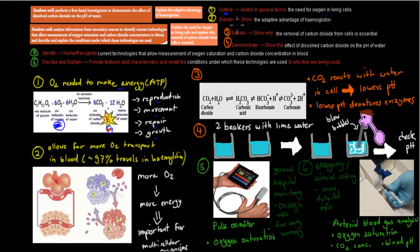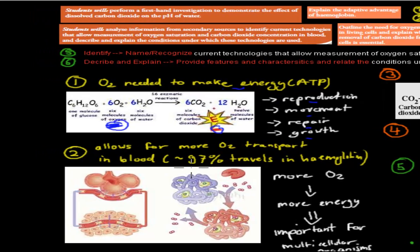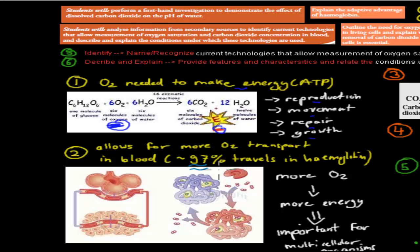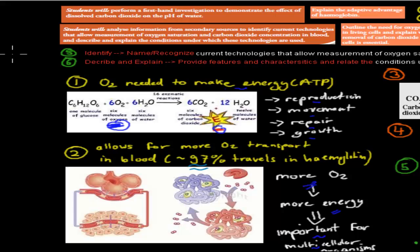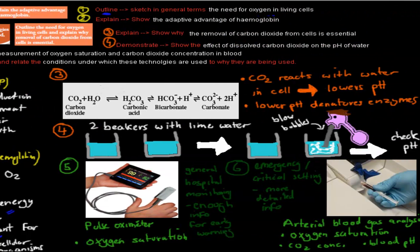The next dot point was 'explain' — show the adaptive advantage of haemoglobin. We need haemoglobin because most of our oxygen is carried in blood — about 98% is carried in haemoglobin. Without haemoglobin we would have less oxygen, and with haemoglobin we can make more energy. This is really important for multicellular organisms such as humans and birds, because they need to sustain lots of cells, requiring lots of oxygen. Without haemoglobin they wouldn't have evolved into those organisms.